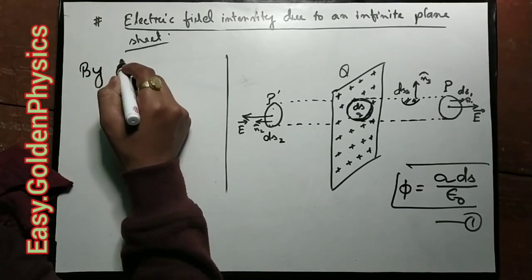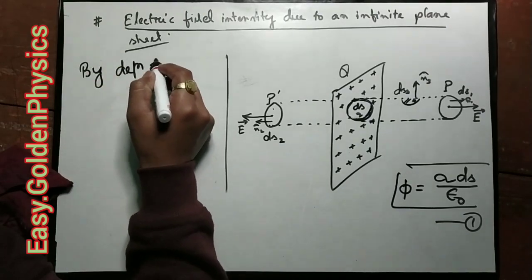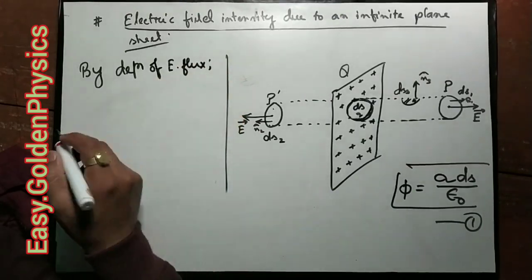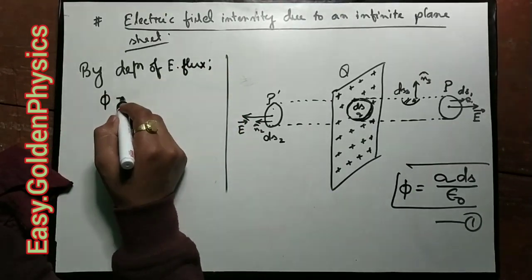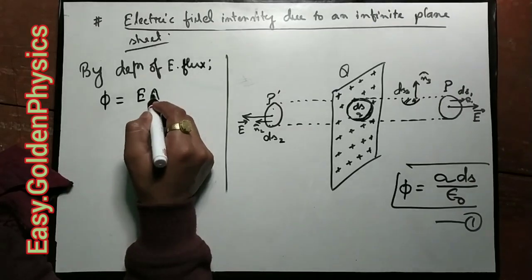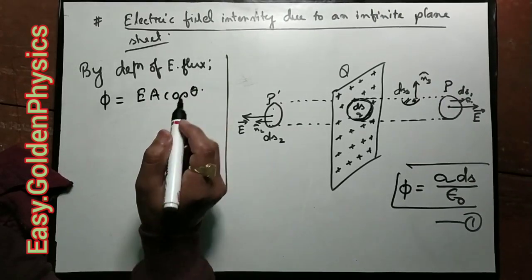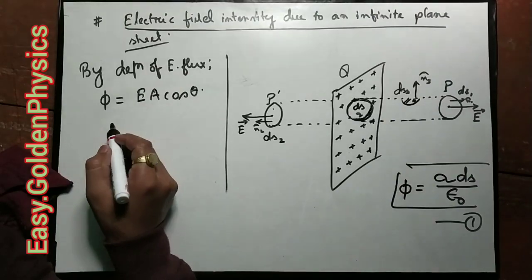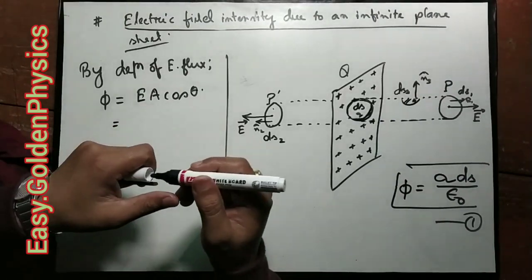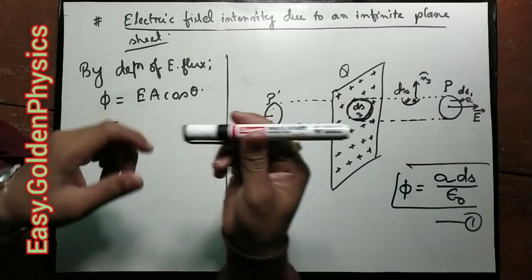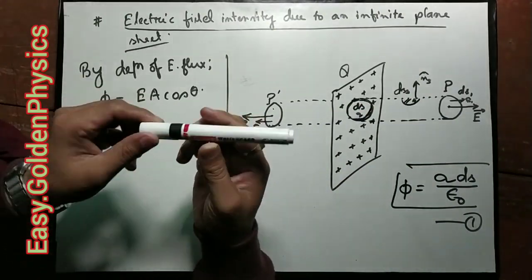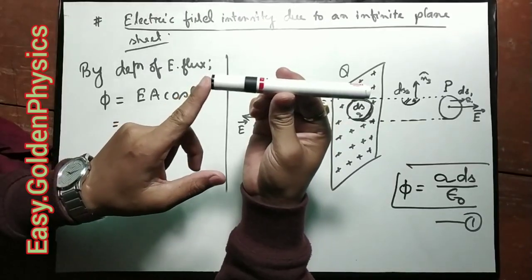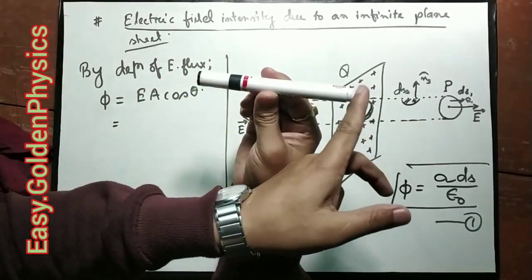By definition of electric flux: electric flux is E times A times cos theta, where cos theta is the angle between the electric field and the area. The total surface area of the cylindrical Gaussian pillbox is considered.